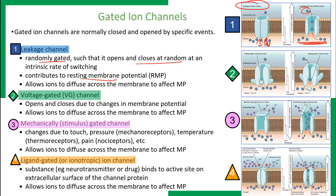The second type of gated ion channel is the voltage-gated ion channel, which opens and closes depending on the membrane potential or voltage across the membrane. Different voltage-gated ion channels open and close in response to different membrane potentials. When the membrane potential is minus 70, this particular voltage-gated channel is closed, stopping ion diffusion. When the voltage changes — depolarizes to minus 50, becoming more positive — the voltage-gated ion channel opens and ions can diffuse across the membrane.